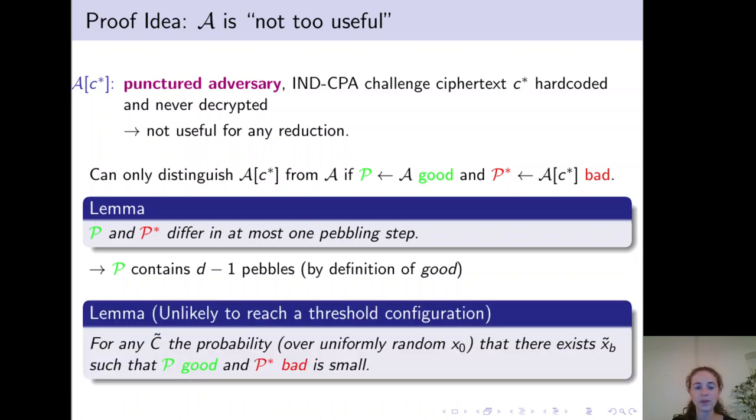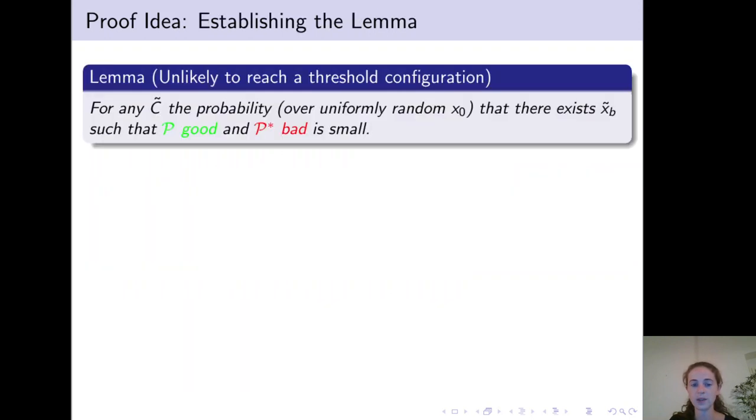We then prove that it is very unlikely for the reduction to reach such a threshold configuration. More precisely, we prove that for any garbled circuit C tilde, the probability over uniformly random input x0 that there exists a garbled input XB tilde such that P is good and P star is bad is very small.